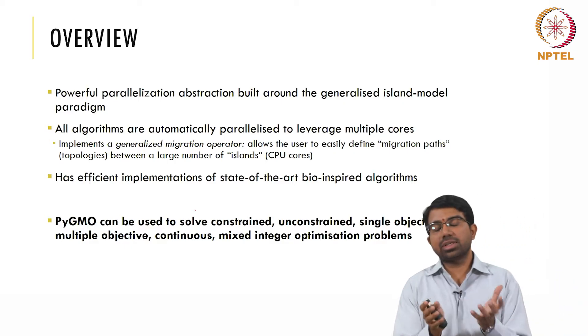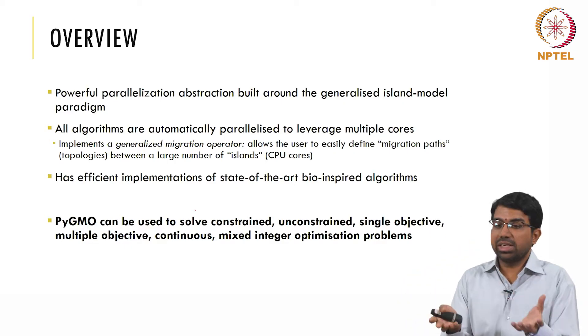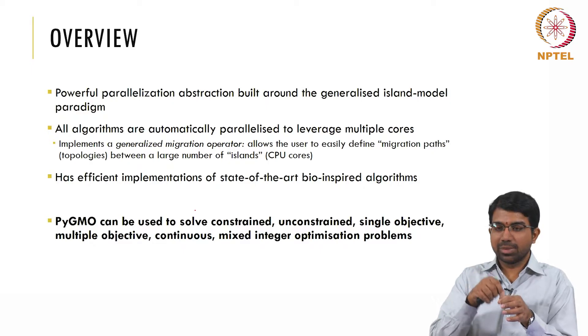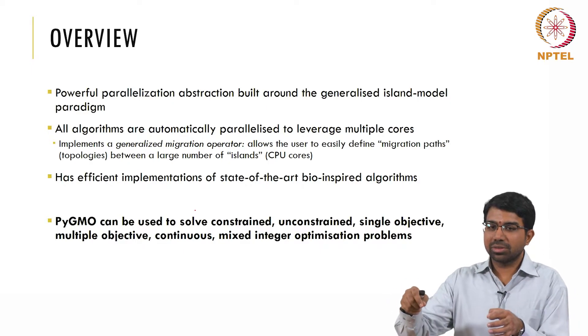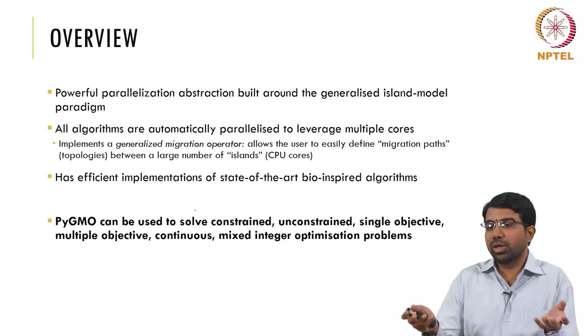There is a generalised migration operator which allows the user to define migration paths between these parallel optimizers. So in some sense, let us say you have 8 CPU cores. You can run simulated annealing on 1, DE on 1, EA on 5 others, shuffle the solutions after a few iterations, and continue.